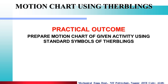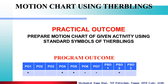The various practical outcomes that we achieved in today's practical are: Prepare a Motion Chart of Given Activity Using Standard Symbols of Therbligs. The various program outcomes achieved are PO1, PO4, PO5, PO6, and Program Specific Outcome PSO2.